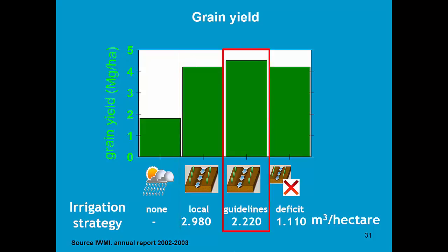By providing the farmers proper guidelines for irrigation, they can even get a higher yield of 4.5 tons per hectare with less water, 2220 cubic meter water per hectare. Less nutrients will be leached out of the root zone.